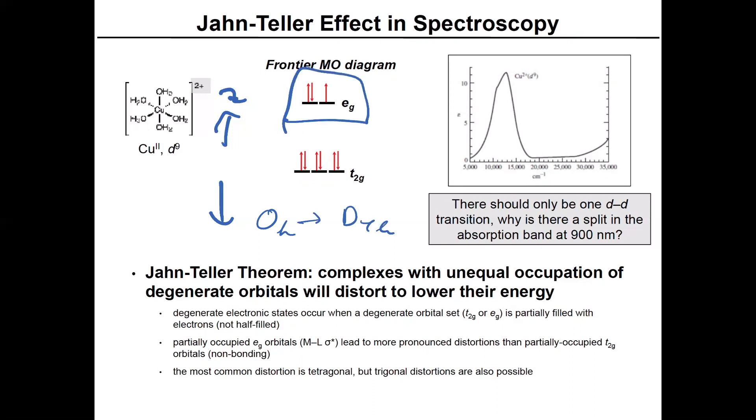And I'll show that on the next slide. But you can see here, there's an unequal occupation of degenerate orbitals. And that's the situation that the Jahn-Teller distortion likes to go. And basically they always distort to lower their energy. And this always happens when you have these degenerate orbital sets that are partially filled. And partially occupied EG orbitals lead to more pronounced distortions than partially occupied T2G orbitals. And the most common distortion is tetragonal, but you can get trigonal distortions as well.